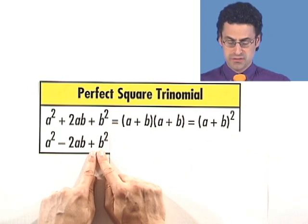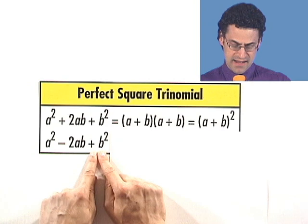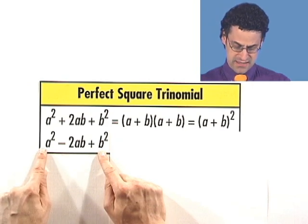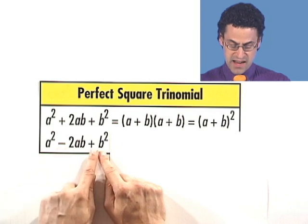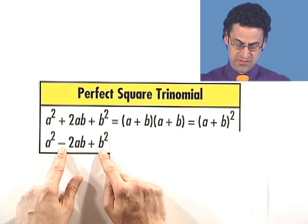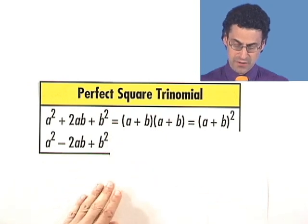I have to think of two numbers whose product is b squared, and yet when I combine them with the a's, I get a negative. So what would it be? The sign would have to be what? Both the same sign, and they'd have to be negative signs.